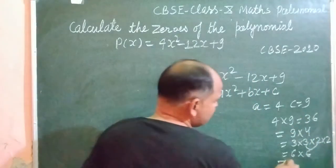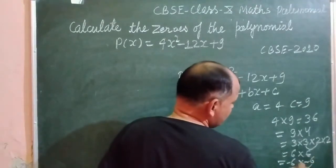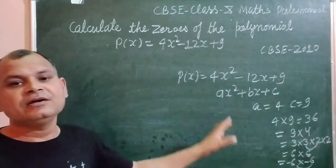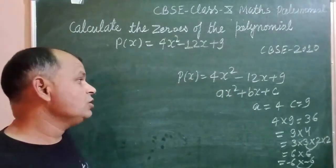We can write as minus 6 into minus 6. When we add minus 6 and minus 6, we got minus 12.